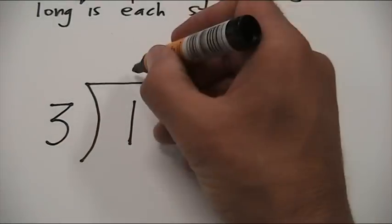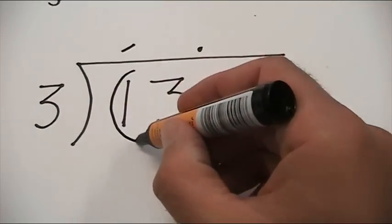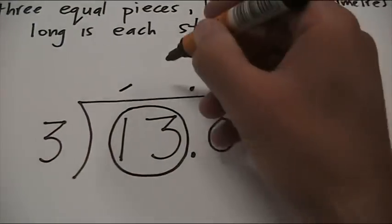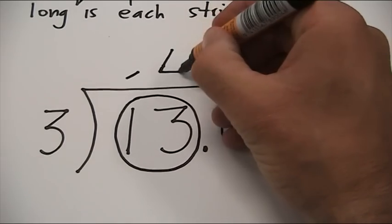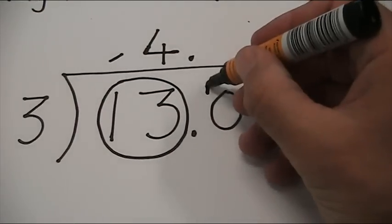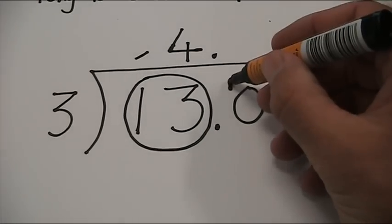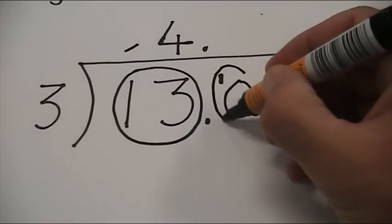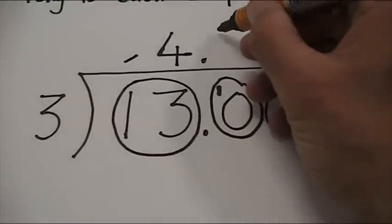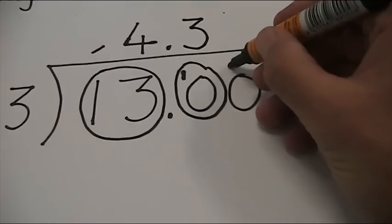Three into one doesn't go. Now join the one with the three. Three into 13 goes four times because three fours are 12, and you've got one left over. You're now going to join that one with a zero, circle it, and you're going to say three into 10 goes three times with one left over.